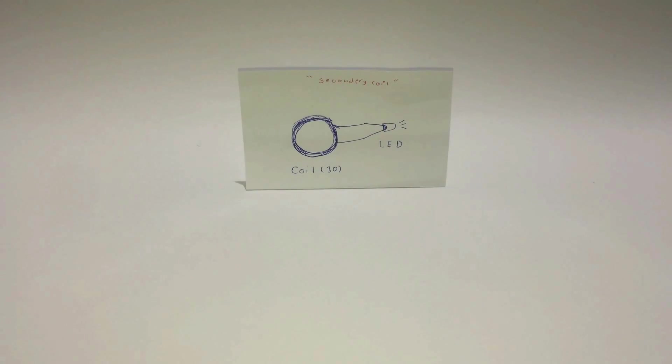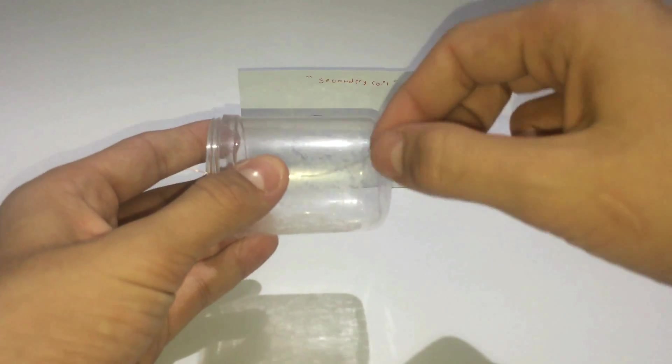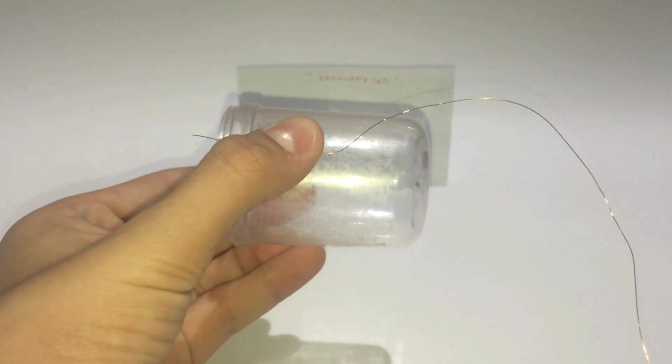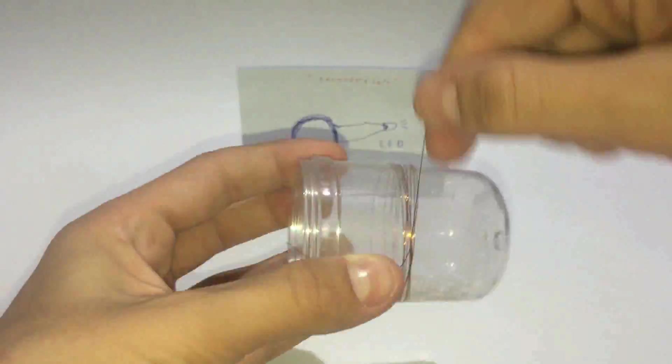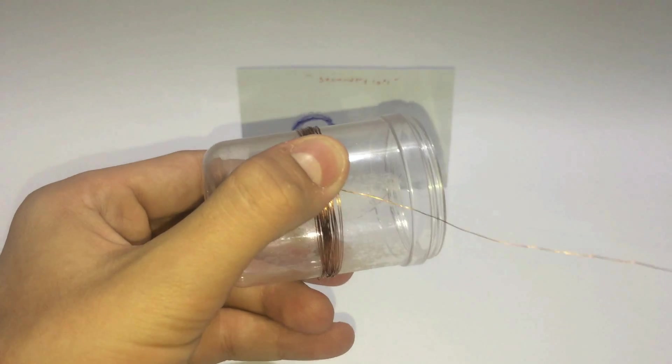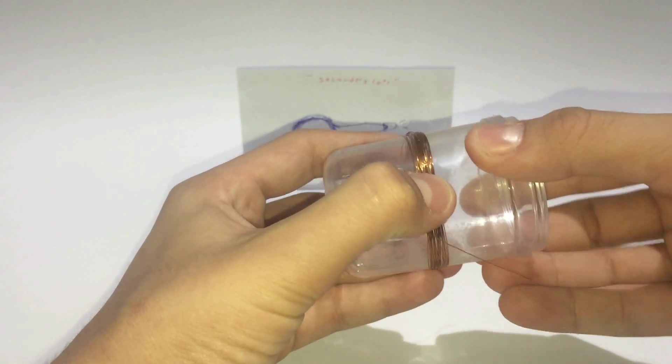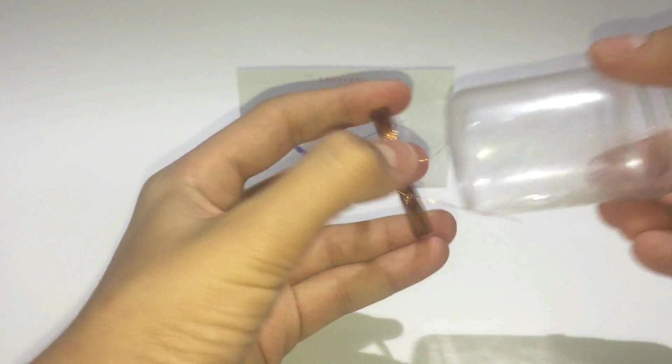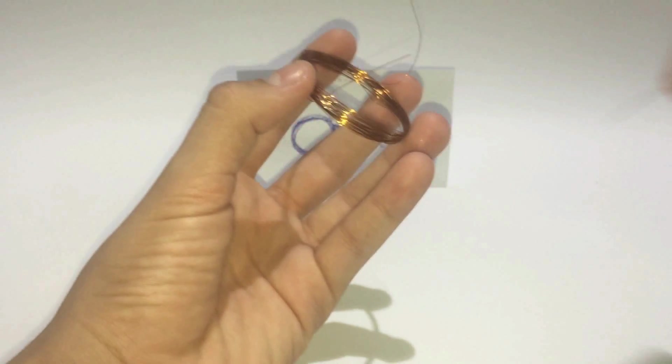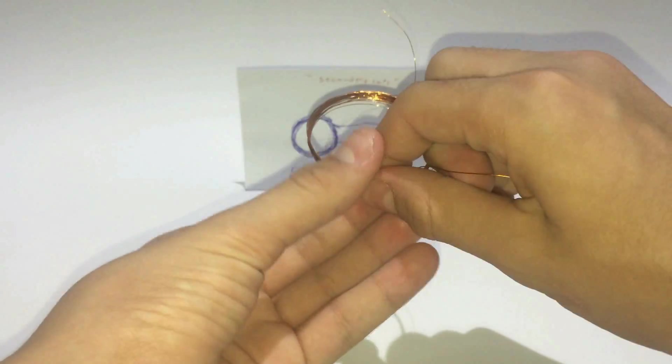I'll start by making the secondary coil or the receiver. I'll start by making the coil 30 turns. Try to find a circular or round object, try to wind copper wire around it 30 turns to form a coil. Cut it after you finish 30 turns and remove it from the round object, and try to use another copper wire to secure the coil from unwinding.